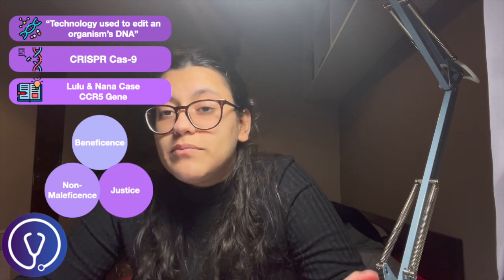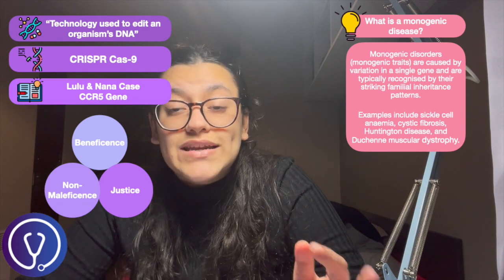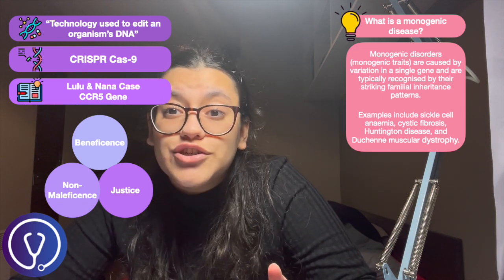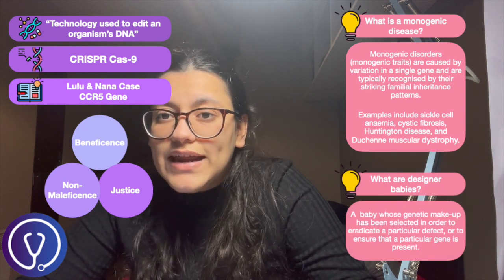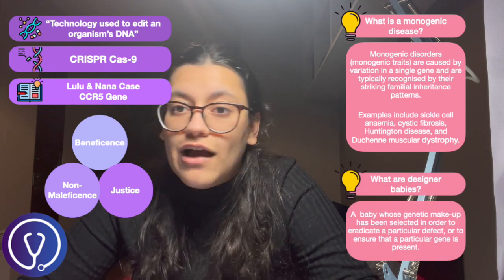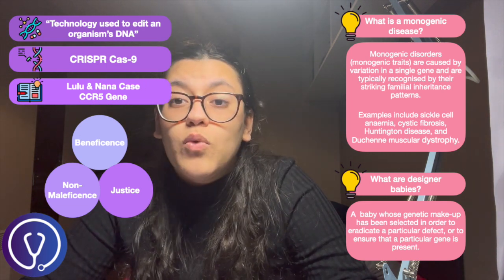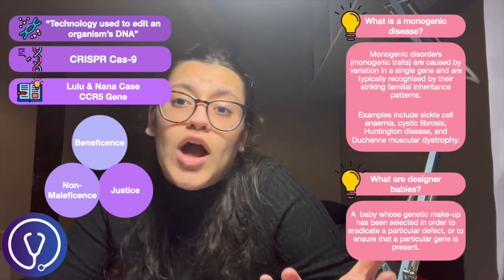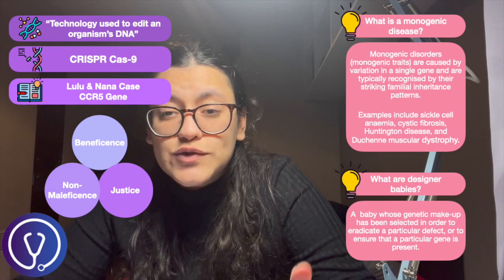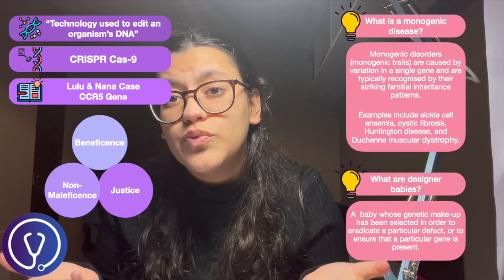Looking at justice, we have to consider the wider implications of genome editing. While it does have potential in preventing certain genetic diseases, it can also lead to the issue of designer babies. Where do we stop genetic editing — do we stop at editing genes that cause diseases, and if so, which diseases? Would we then start editing physical features of children to create the most ideal child possible?